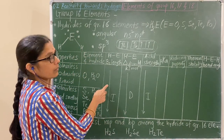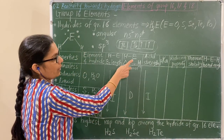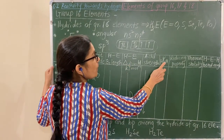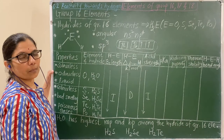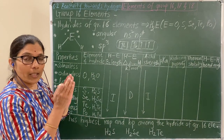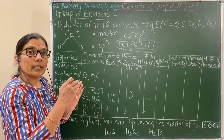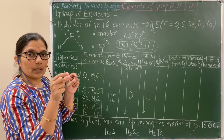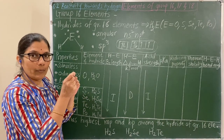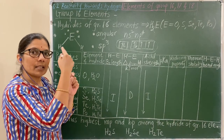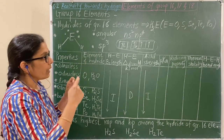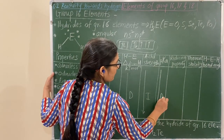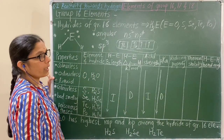Because bond dissociation enthalpy decreases, acid strength increases. Regarding pKa values: smaller the pKa value, greater is the acid strength. Therefore, if acid strength increases, pKa values decrease down the group.